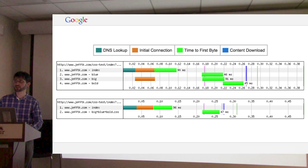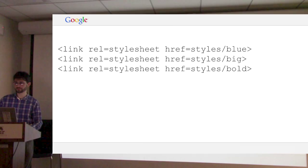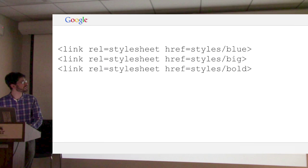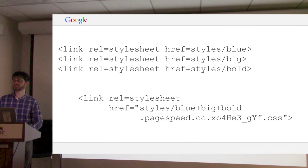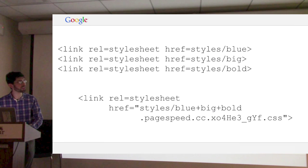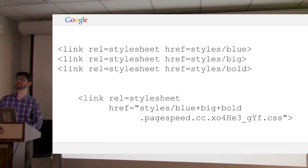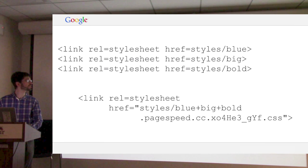CSS is often blocking the render — we don't show anything on the page until we have all the CSS, so it's really important to make this more efficient. PageSpeed sees the three CSS files and turns them into one concatenated CSS file. It's not quite just concatenation though — for example, imagine that one file ends with an open curly brace. That works fine alone, but if you blindly concatenated the three files it would ruin all the styles for the later ones. So we actually have to look them over, verify them, and make sure we're not introducing problems.